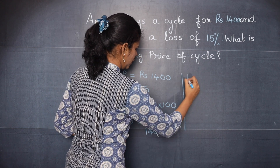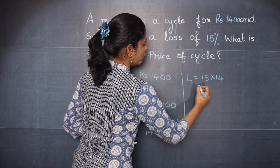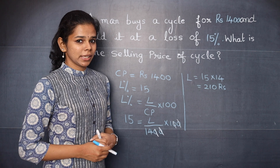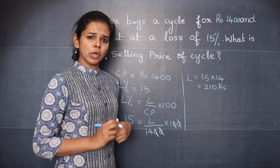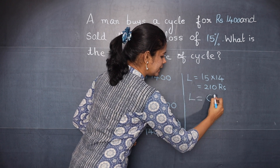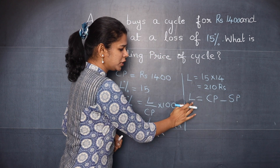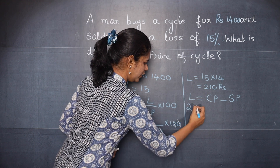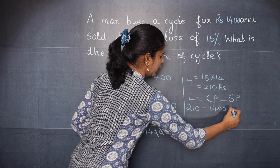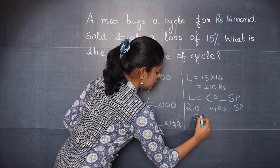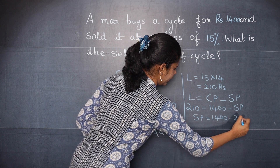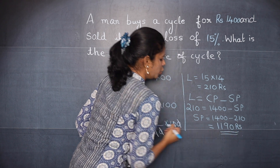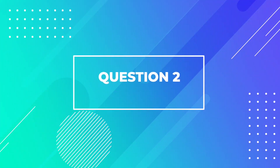Substituting: 15 equals loss divided by 1400, multiplied by 100. Cancelling two zeros, loss equals 15 multiplied by 14, which gives 210 rupees. Now using the loss formula — loss equals CP minus SP — substituting: 210 equals 1400 minus SP, so SP equals 1400 minus 210, which is 1190 rupees. So the selling price of the cycle is 1190 rupees.